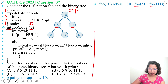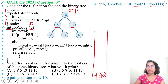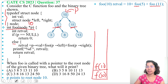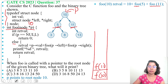Let's take a stack for tracking the function calls. First we call foo(10). After this we'll call foo(5) and foo(11). We keep foo(11) in the stack and first call foo(5).